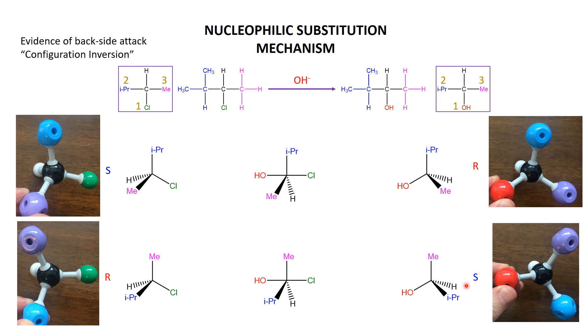Got to be very careful in how I phrase that, but what's important in this particular example is we've inverted the configuration - what was on the left is now on the right. That is prime evidence that the OH (the nucleophile more generally) comes in from the backside to push the halogen (in this case the chlorine) away.